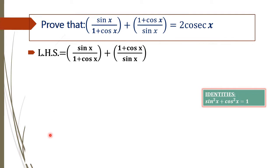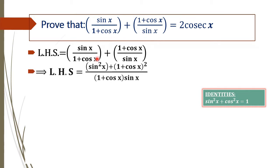In order to simplify, we are cross-multiplying this equation. Then sin x into sin x will give sin square x, and 1 plus cos x into 1 plus cos x will give 1 plus cos x whole square, all divided by 1 plus cos x into sin x. This is the form we get after taking the LCM of this equation.